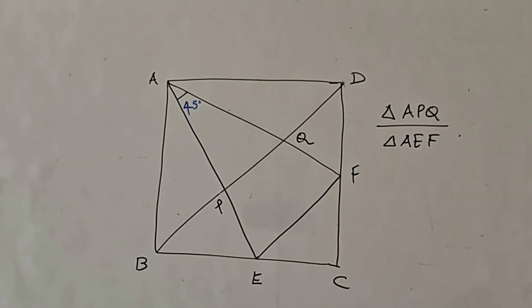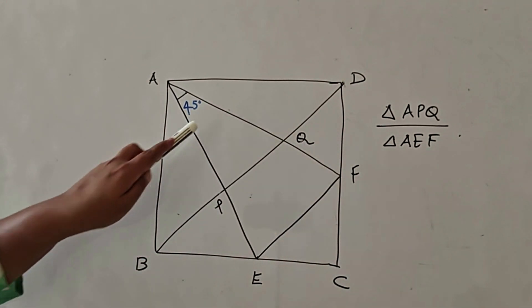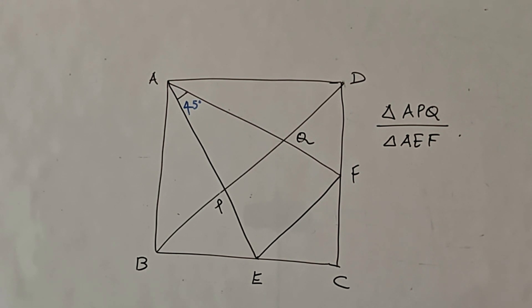We need to find the ratio of the areas of triangle APQ, which is a smaller triangle, and triangle AEF, which is a larger triangle.